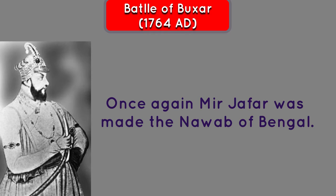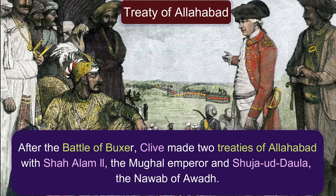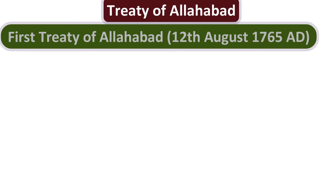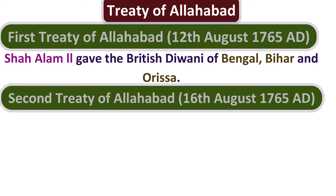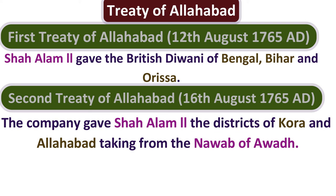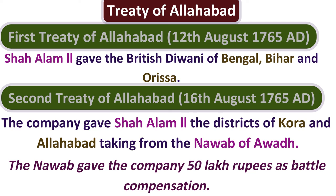After the Battle of Buxar, Clive made two Treaties of Allahabad — one with Shah Alam II, the Mughal Emperor, and one with Shuja-ud-Daula, the Nawab of Awadh. The first Treaty of Allahabad was made on 12th August 1765, by which Shah Alam gave the British the Diwani of Bengal, Bihar, and Orissa. The second Treaty of Allahabad was made on 16th August 1765, by which the company gave Shah Alam II the districts of Kara and Allahabad, taken from the Nawab of Awadh. The Nawab gave the company 50 lakh rupees as battle compensation.